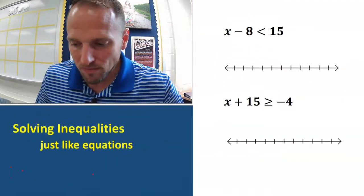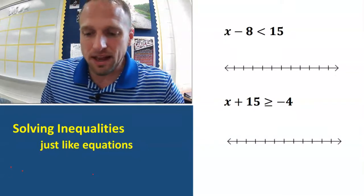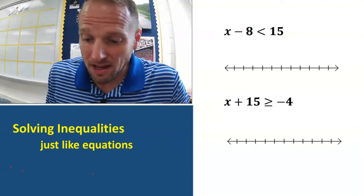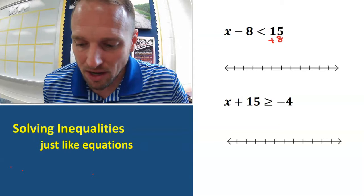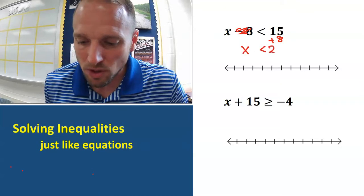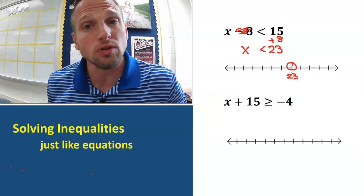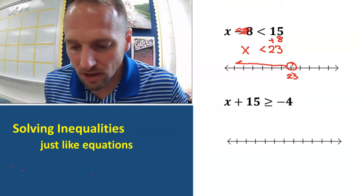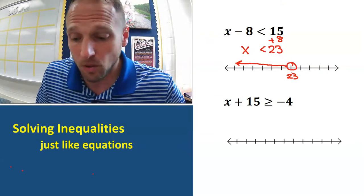Now we need to actually solve for X. X minus 8 is less than 15 — this is going to be just like an equation. Add 8 to the other side: cross the line, change the sign. So we get X is less than 23. Mark 23 on the number line — open circle, arrow pointing to the left. Anything less than 23 will make that inequality true.